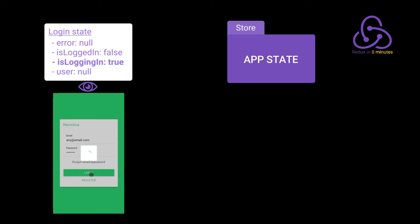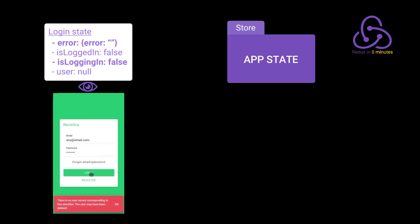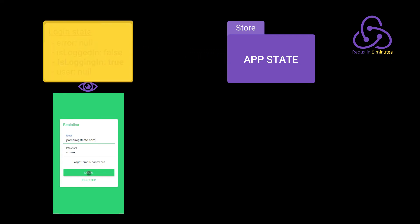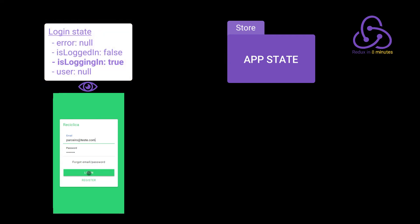Let's imagine we get an error response from the server informing us that no user was found with that email. The service that made the call to the back end will fire a new event to the store, and this event will change the state to inform that there was an error on logging. The login page is watching the login state, so it will realize the user is not logging in anymore — the loading component disappears and the page shows the error. Now the user corrects the email and clicks login again. This click fires an event that changes the state to inform that the error should disappear and the user is trying to log in again.